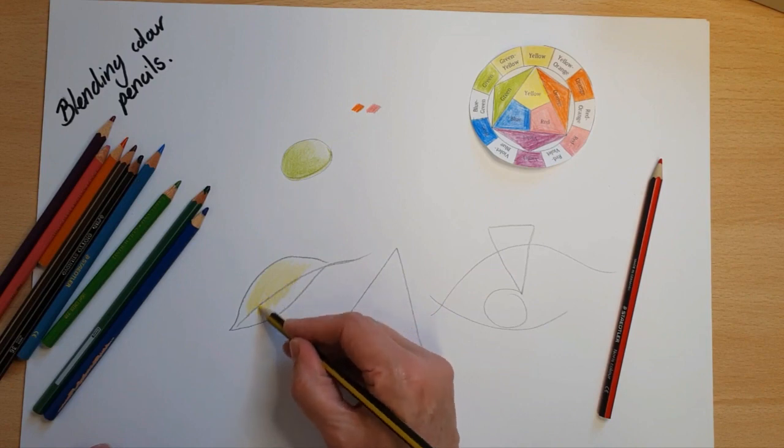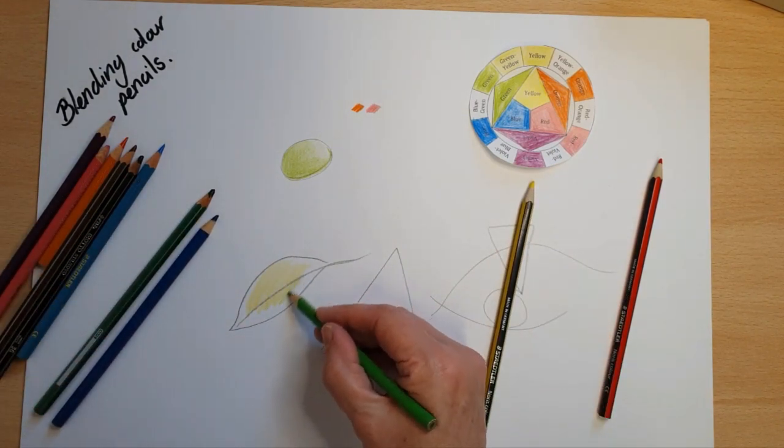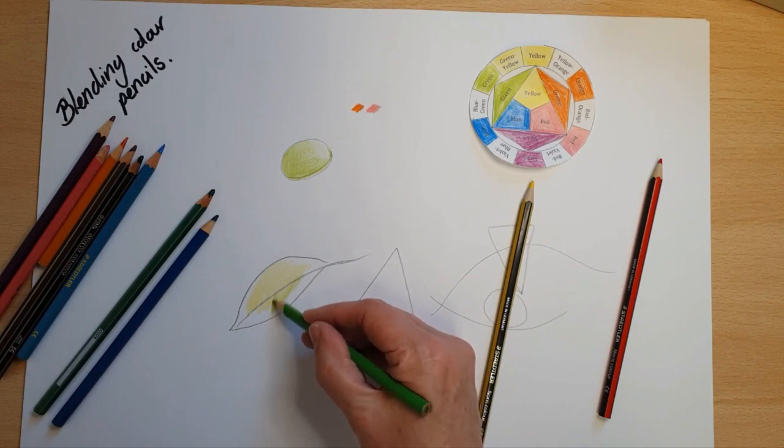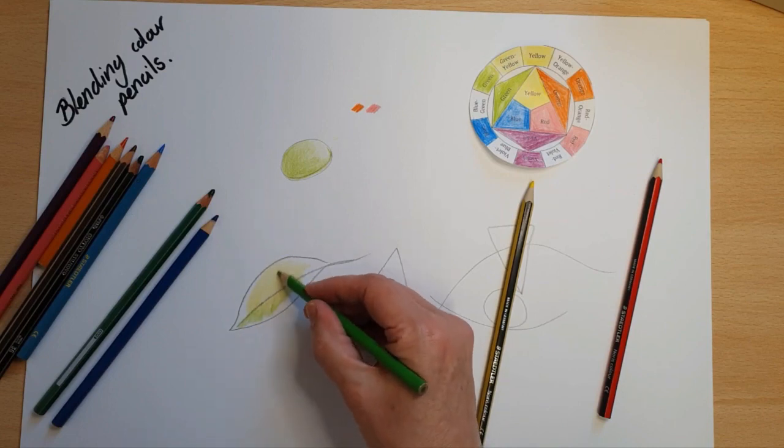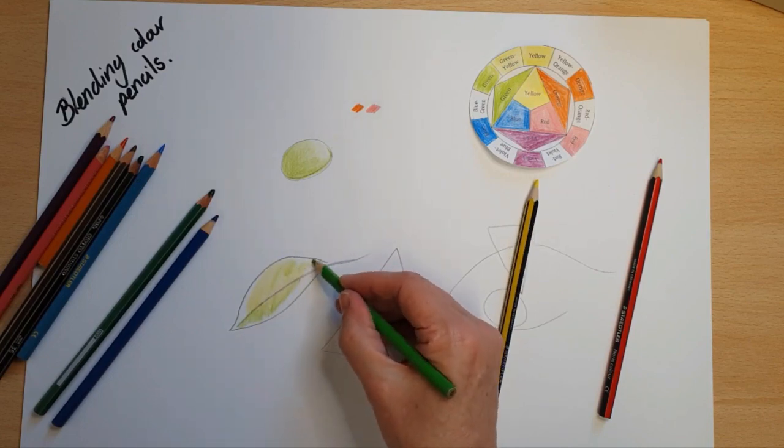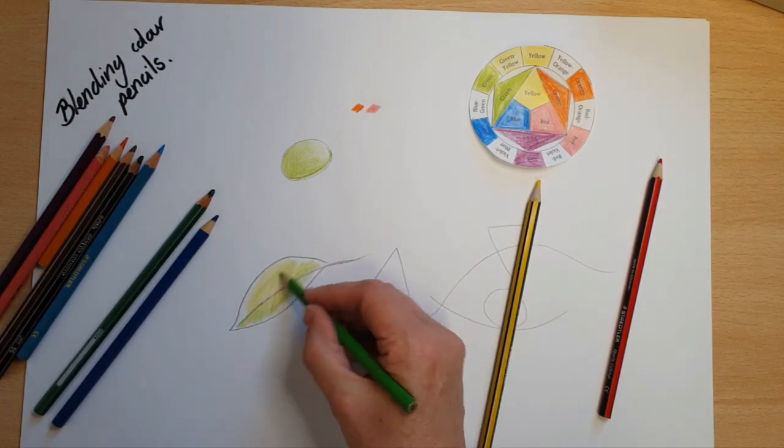And then I'm going to fade in a bit of green. Now leaves often have lines in them so I might try and build those up as I color, trying to add texture and shape. I'm blending some green into the edge of my yellow crayon there.